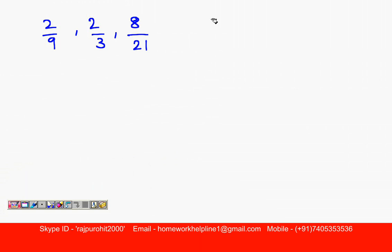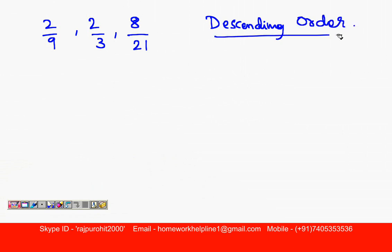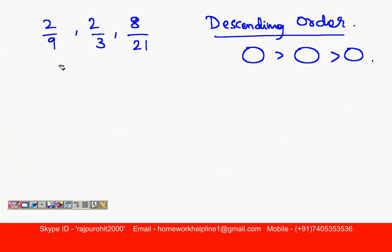Now this is supposed to be arranged in descending order. Descending order means bigger number, smaller than that, and smallest. Now the numbers in the denominator are 9, 3, and 21.